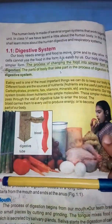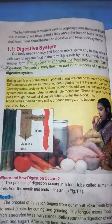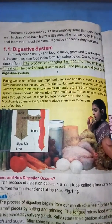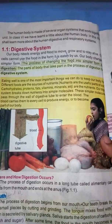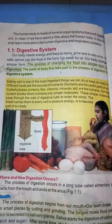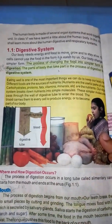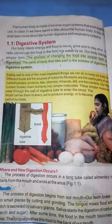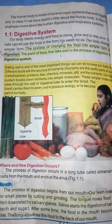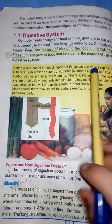Our body needs energy and food to grow, to stay alive, and to move. Ab humein khorak kyun khani parti hai? Hamari body ko zarurat hai ke hum is wajah se energy hasil karein taake hum chal phir sakein, grow kar sakein, aur zinda reh sakein. The food we eat is digested and used in the form of energy. So it is digested into simpler form — this process is called digestion.